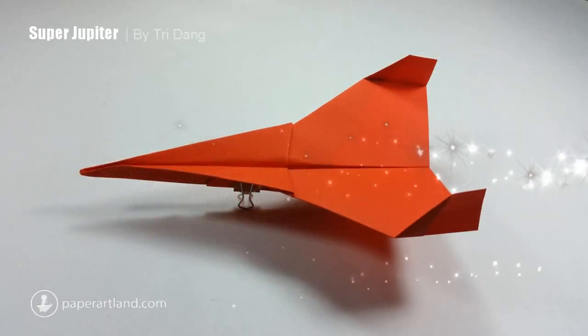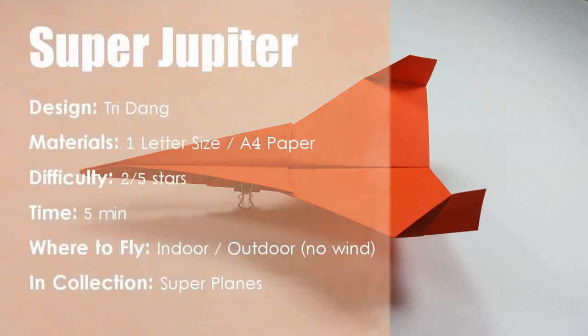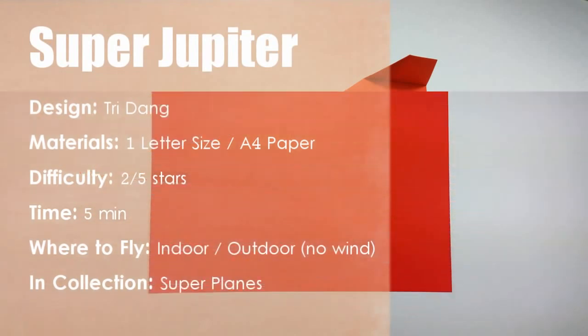Hi guys, on this tutorial, let's remake the Jupiter fighter and call this Super Jupiter. Why I call this Super Jupiter? Because this paper airplane is an improved version of the Jupiter fighter and it works very well with A4 paper.